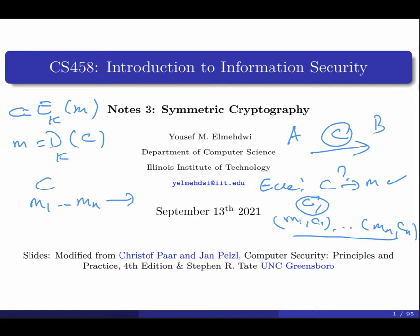In the chosen-plaintext attack, the attacker can send M1 through Mn to a server, the server encrypts them, and the attacker gets C1 through Cn. For the chosen-ciphertext attack, it's the reverse — the attacker sends C1 through Cn to the server, the server decrypts them, and the attacker gets M1 through Mn. This is possible when the attacker is a legitimate user who can generate messages but cannot see other people's messages.